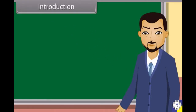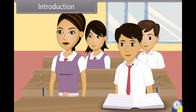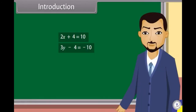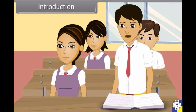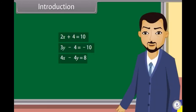Students, look at these equations. What type of equations are these? These are linear equations. And what type of equation is this? This is also a linear equation. But it has two variables, so it's a linear equation in two variables. Today we will learn about the pair of linear equations in two variables.